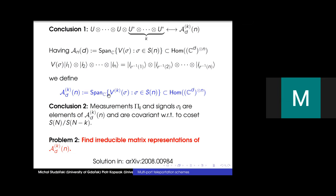We can summarize that all measurements and signals are elements of this algebra and are covariant with respect to S_n/S_{n-k}. Since we have identified all symmetries in our problem, we can simplify computations using representation theory. Our goal is to find irreducible matrix representations of the algebra of partially transposed permutation operators.